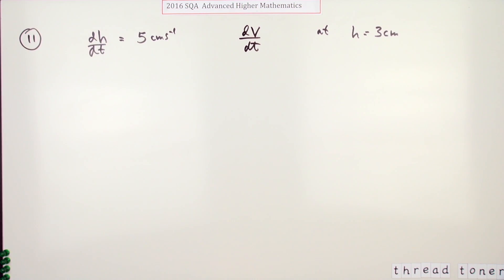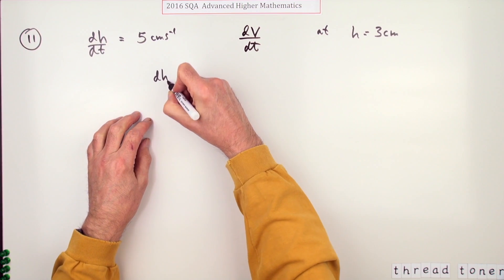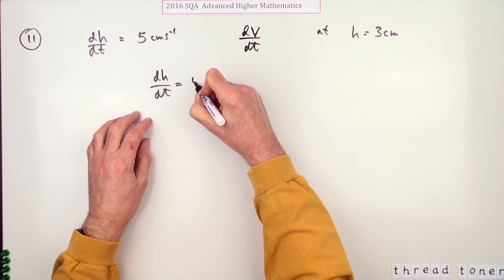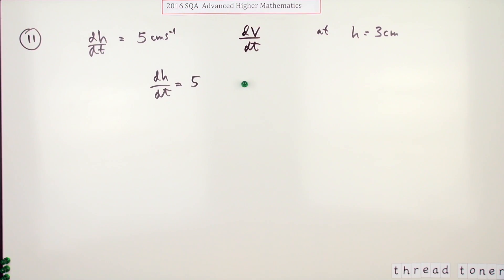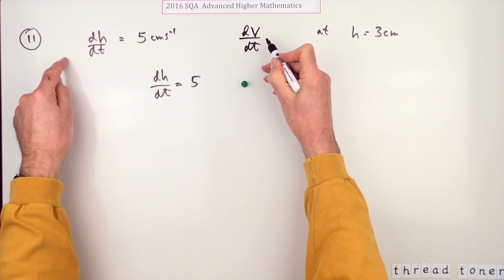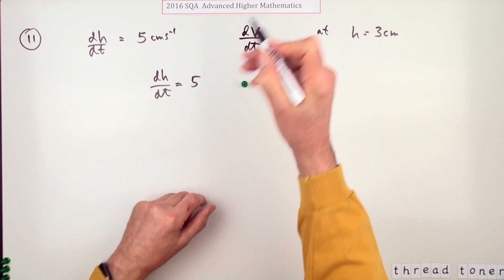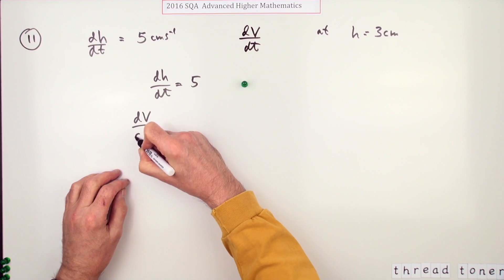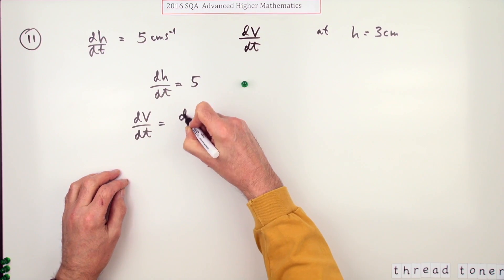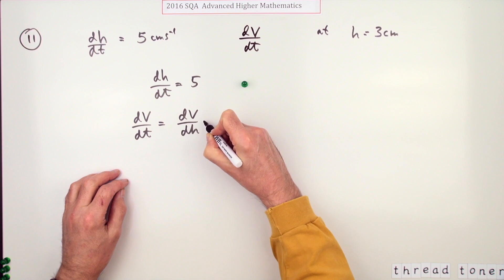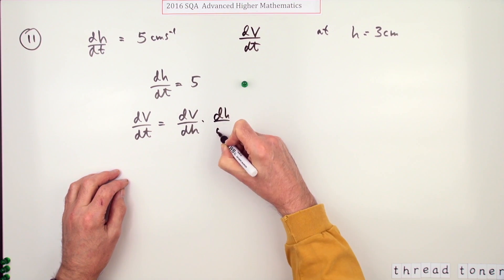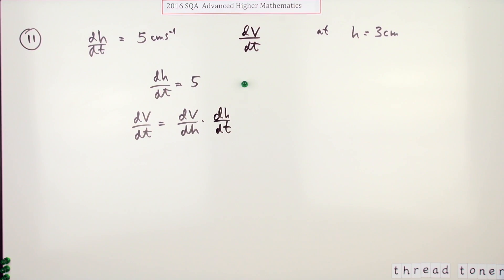Just put it down again: dh/dt equals five, that's the first mark. Now I need a connection because to find dV/dt, the plan will be to get dV/dt. If I can have dV/dh, I can then multiply it by dh/dt. Realizing that gets you a mark.